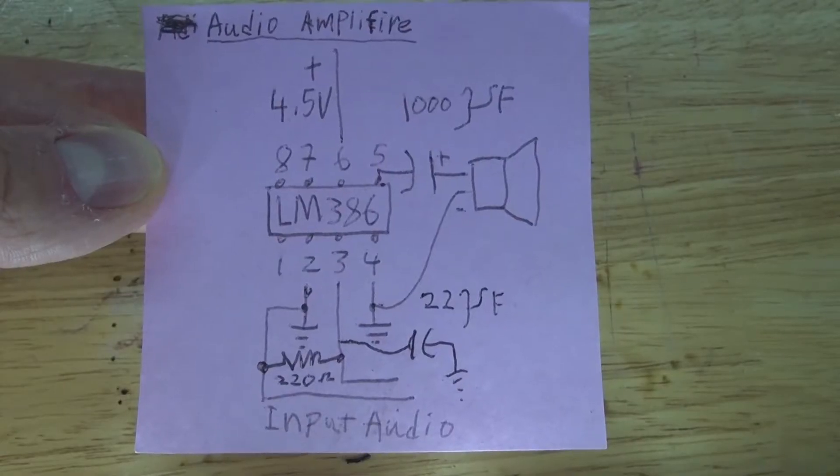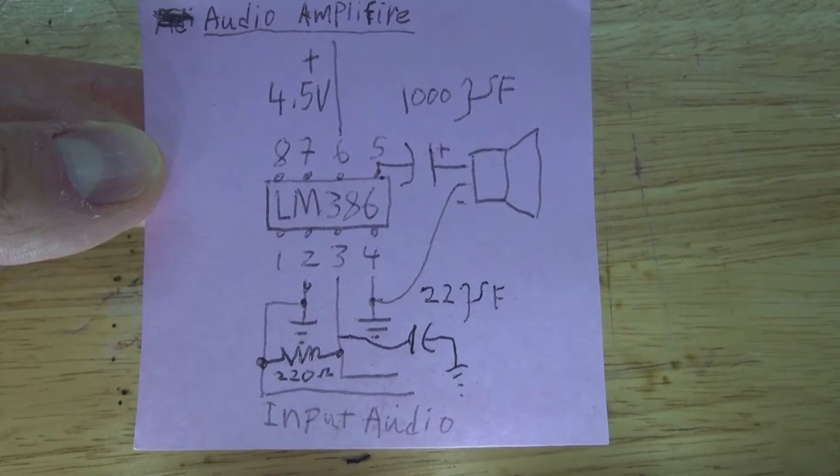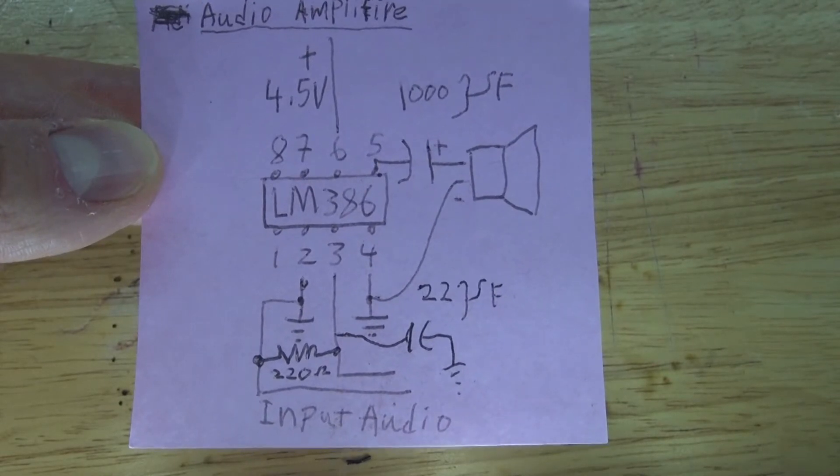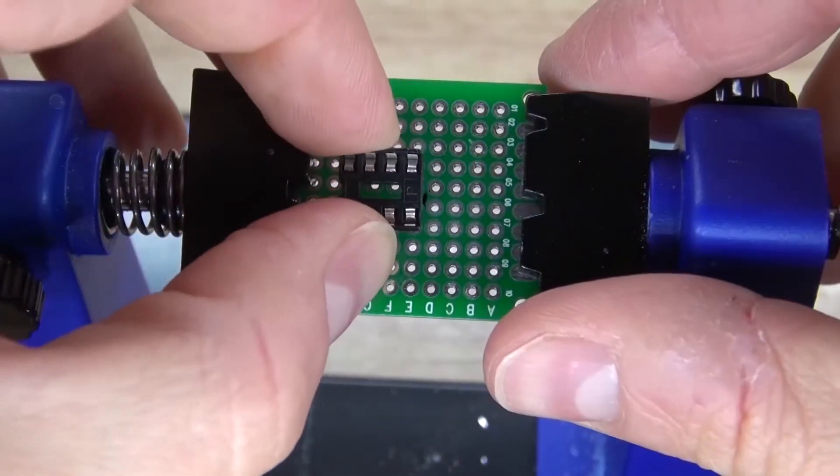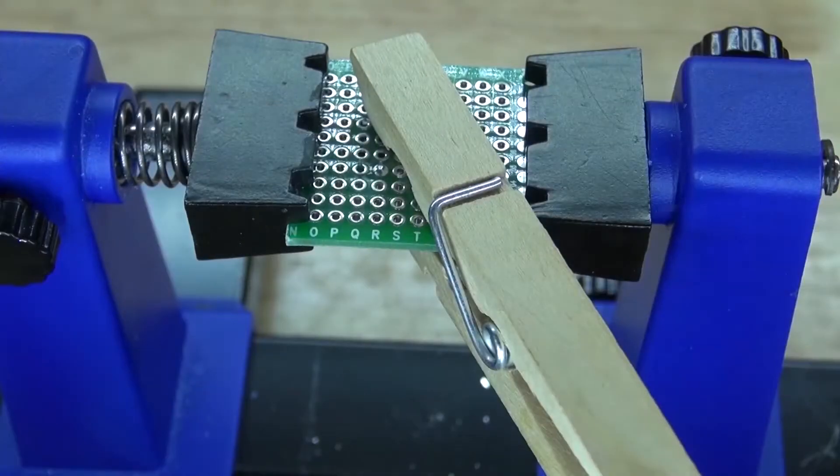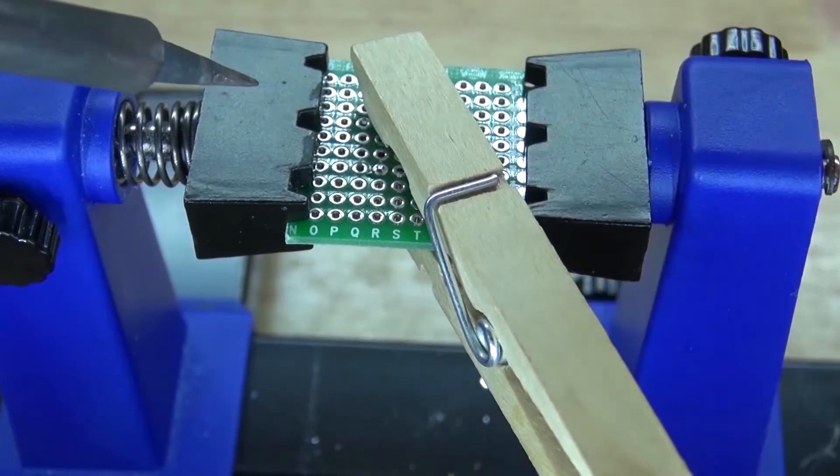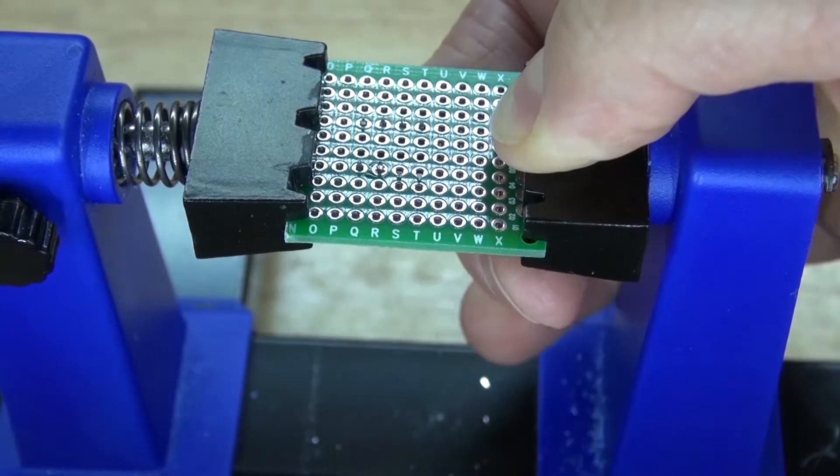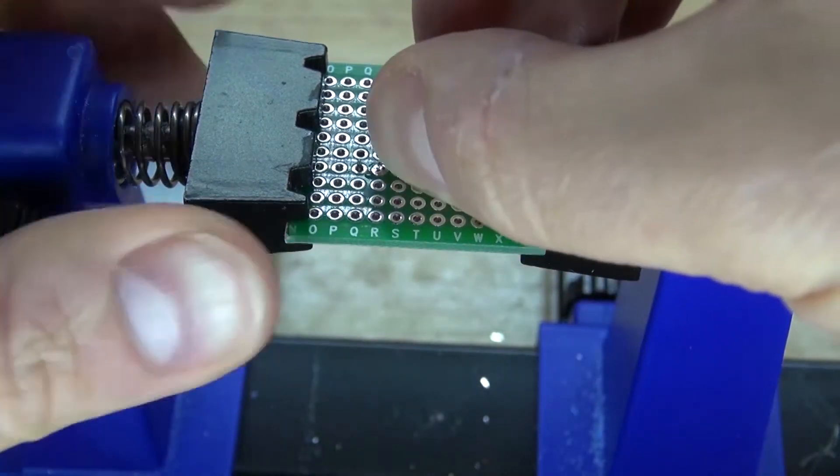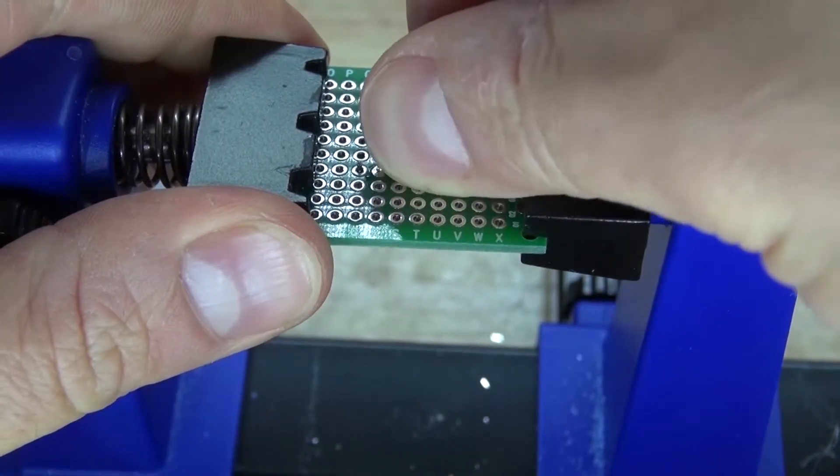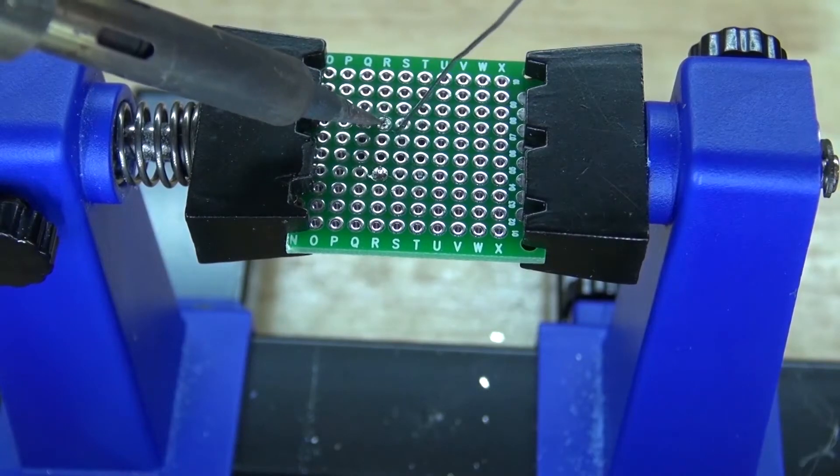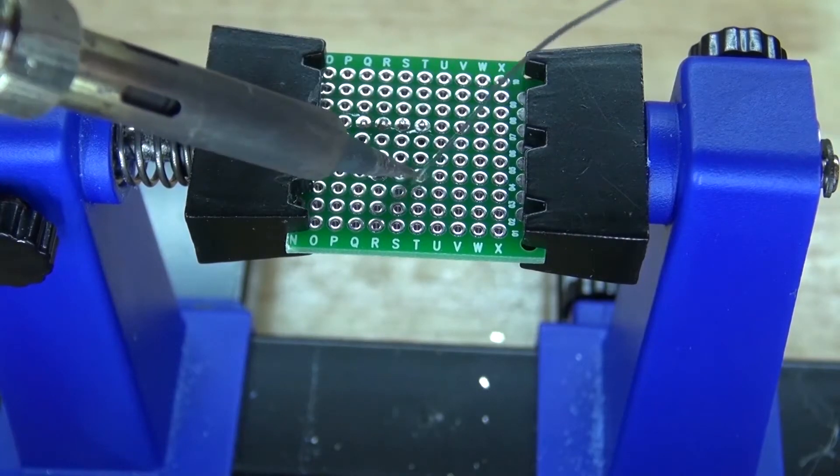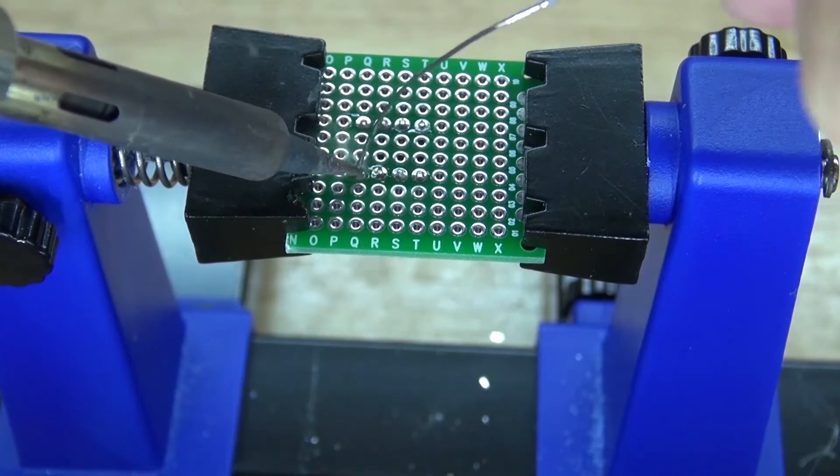This right here is the schematic that you're going to need to follow to make this circuit. And now let's go ahead and assemble this project and let's get started. First you're going to need to take your IC socket holder and place it in the center of the perf board. Solder one pin into place, hold the IC socket holder flat and then remelt the solder. That way everything is flushed to the board. And now solder the rest of the pins into place. And it should look just like that.